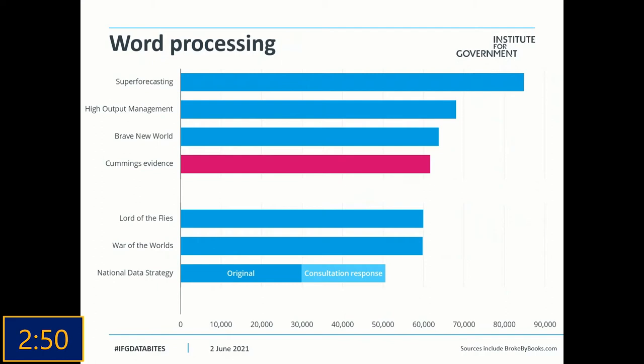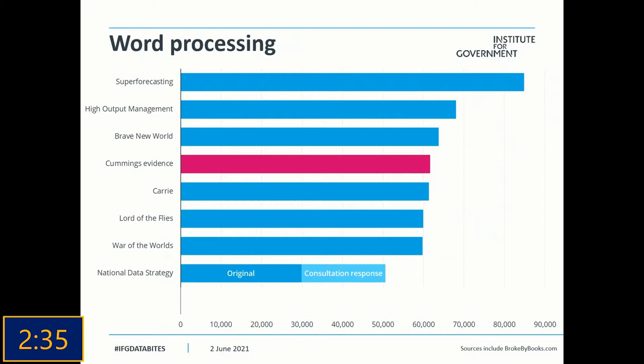One of the notable works of literature closest in length to the Cummings transcript — I promise I'm not making this up — is the Stephen King classic Carrie. The story of a young woman called Carrie who uses the powers at her disposal to exact revenge upon her enemies was just one of the narratives Mr Cummings raised during his evidence.